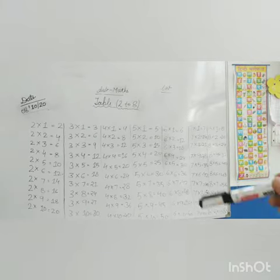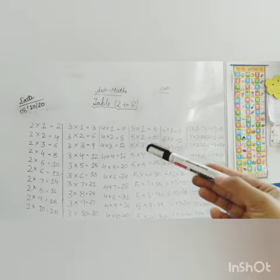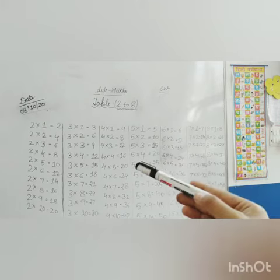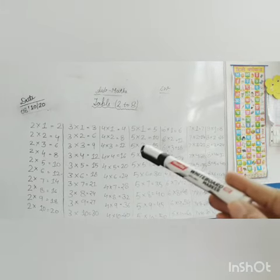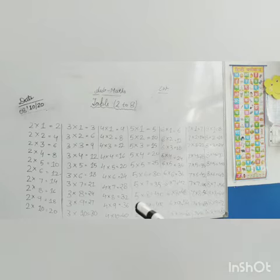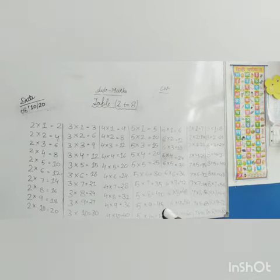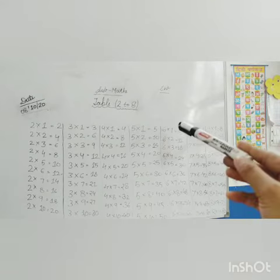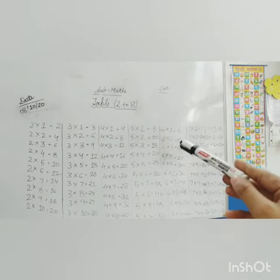5 ones are 5, 5 twos are 10, 5 threes are 15, 5 fours are 20, 5 fives are 25, 5 sixes are 30, 5 sevens are 35, 5 eights are 40, 5 nines are 45, 5 tens are 50. This way.